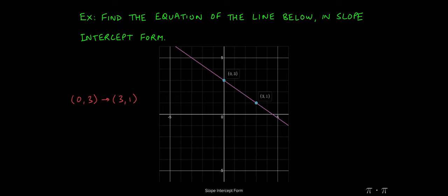Looking at the line from left to right, we can identify what the slope of this line is going to be. So if we start at the point (0,3) and look at what happens as we move to the right, we observe that first we need to move down by 2 units, so the rise is going to be negative 2.